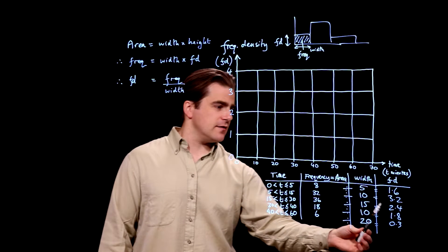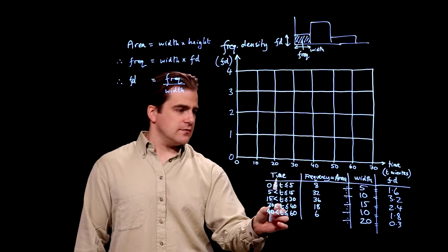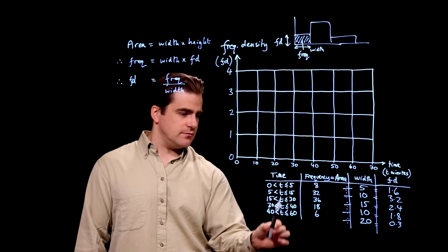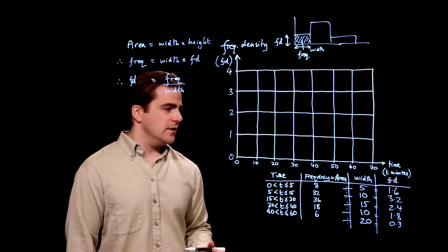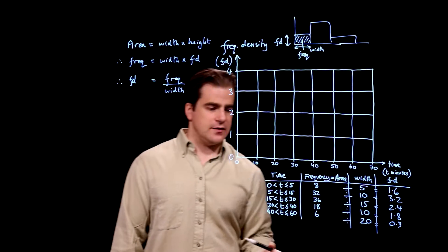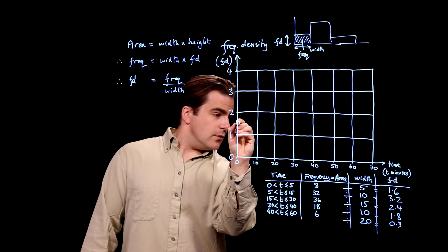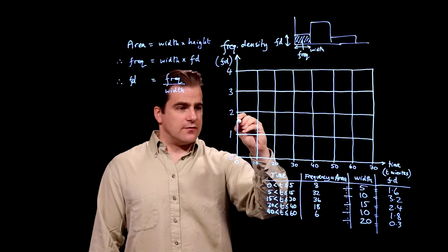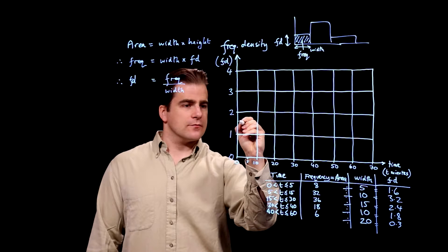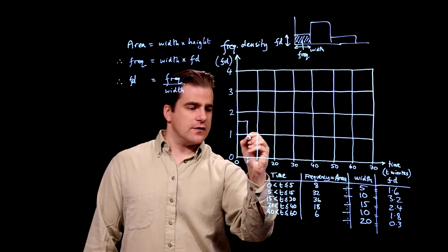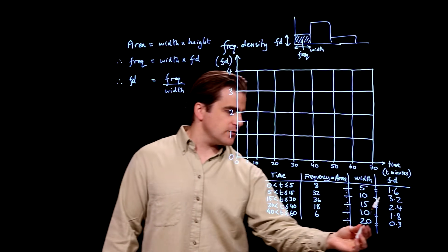And now we're ready to plot. We're going to plot the frequency density up here, and we're going to use these time divisions with these widths along here. So let's go. Frequency density 1.6, it's about there. Width of 5 from 0 to 5. So, width of 5, 0 to 5. Boom. There's our first box.